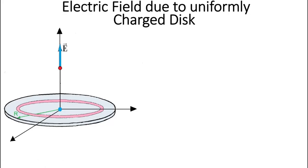Welcome to physics class. Today we are going to talk about the electric field due to a uniformly charged disk. We want to calculate this electric field on the z-axis that is perpendicular to the disk and passes through the center of the disk. We consider this disk is thin and uniformly charged — let's say it is charged with a positive charge plus Q.